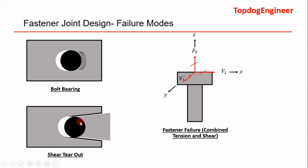Bolt bearing and shear tearout is a failure mode for the material that is holding the fastener in place. In bolt bearing, your fastener is putting pressure on the inside edge — putting a shear on the inside edge of the clearance hole — and it causes your material to yield. In shear tearout, it's the same thing, except your bolt rips out and takes the material with it. And also fastener failure — your fastener fails.